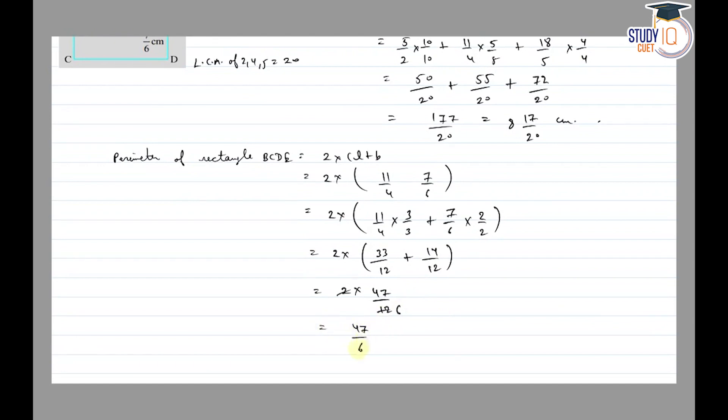47 upon 6 is equal to 6, since 7 times 6 is 42.